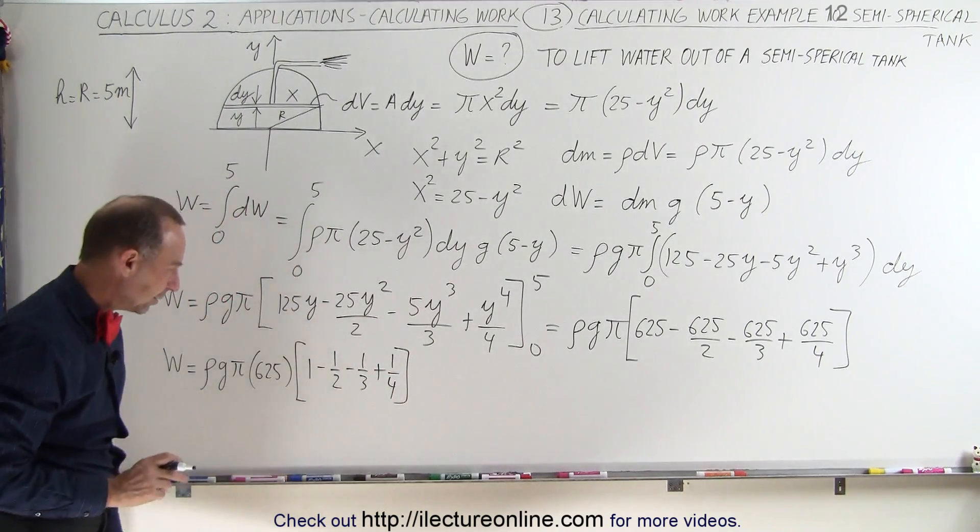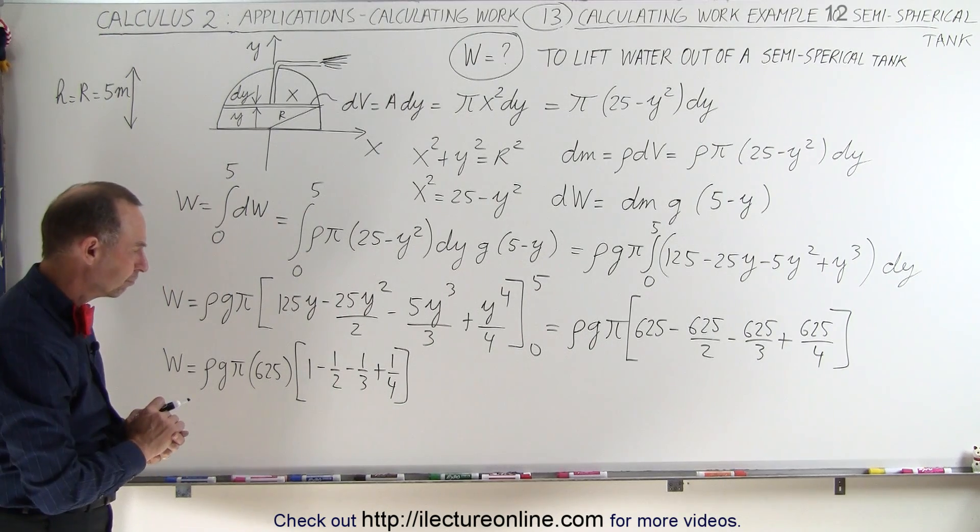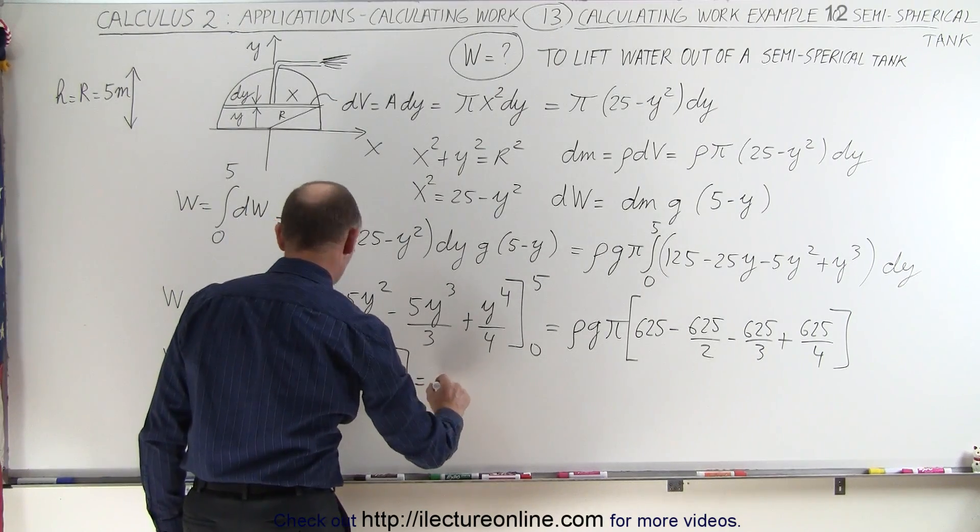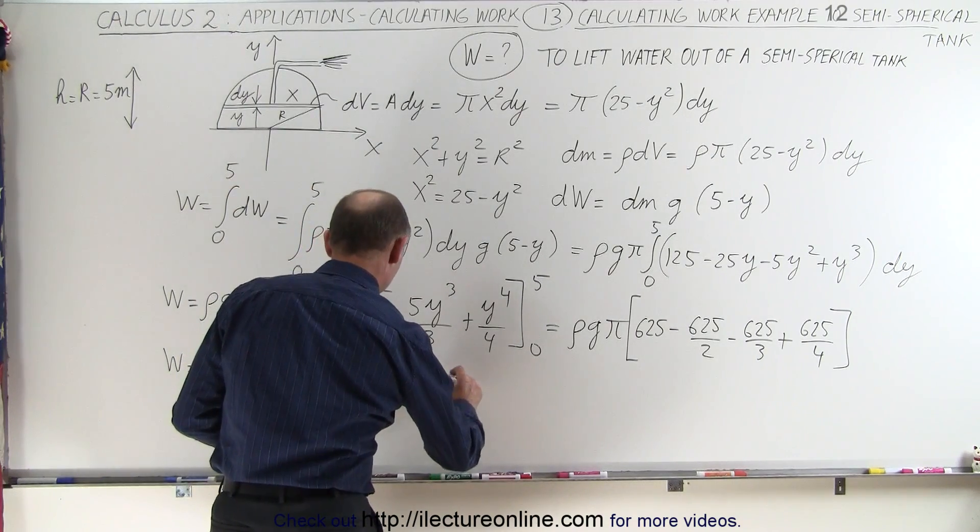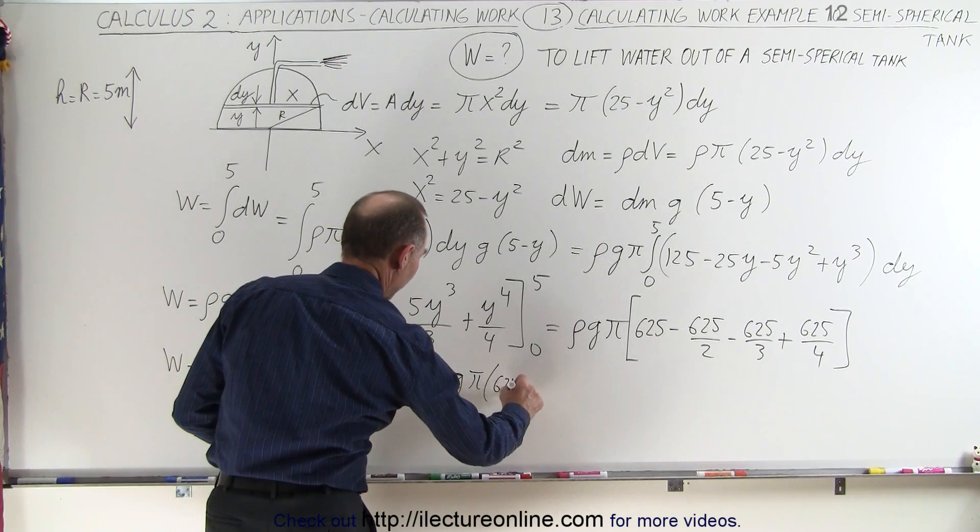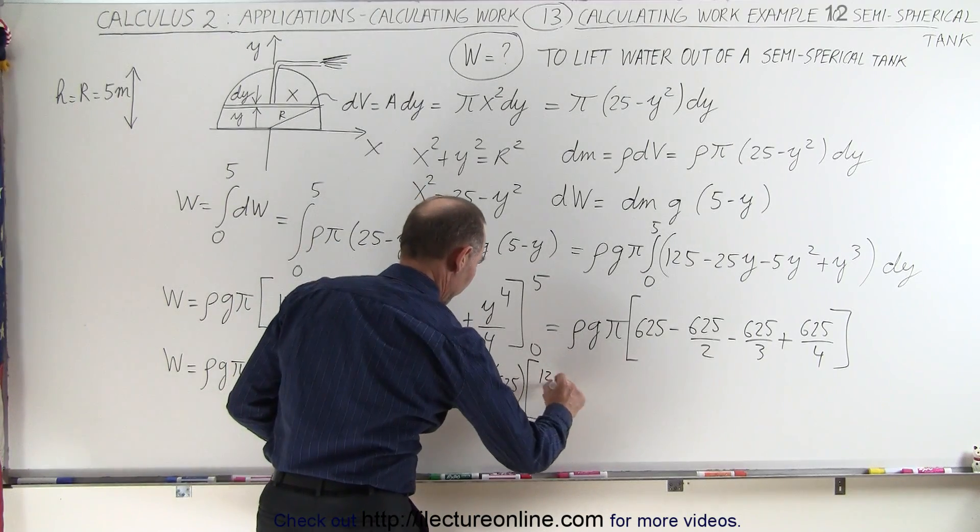Now here, the common denominator looks like it's going to be 12. Yes, 12. So that means that this is equal to density times g times π times 625 times...